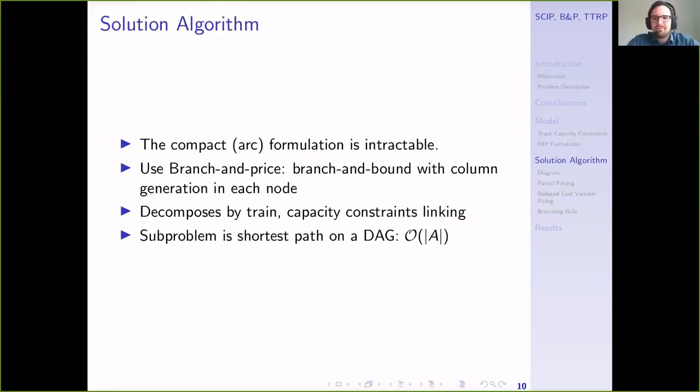The compact version of this formulation is a multi-commodity flow problem with capacity constraints. It's intractable both on commercial solvers and using GCG as well. But it is ideal for the application of branch and price, which is a branch and bound algorithm with column generation in each node. The nice thing is it decomposes the problem by train. The capacity constraints link the train paths, but each sub-problem will simply be a shortest path problem on a directed acyclic graph corresponding to a single train. They can be solved very efficiently.